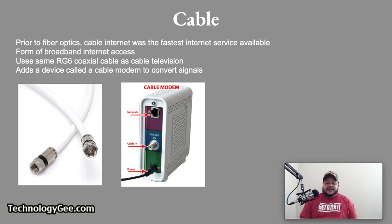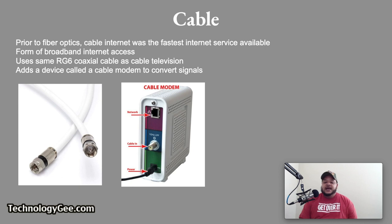Let's talk about cable. Prior to the advent of fiber optics, the fastest internet service available to home and business customers was cable internet. Cable internet is a form of broadband internet access that uses the same RG6 coaxial cable as cable television, but adds a device called a cable modem to convert the signal for use by computers and home or business networks.